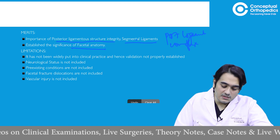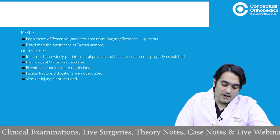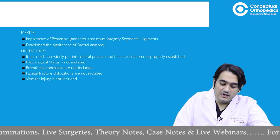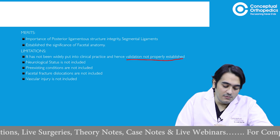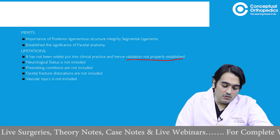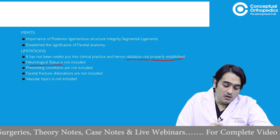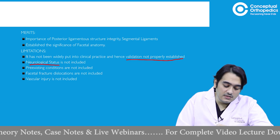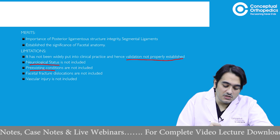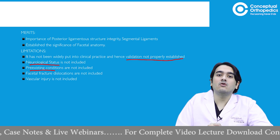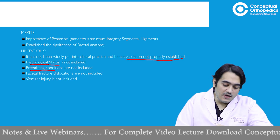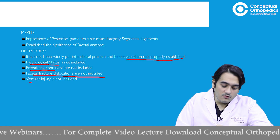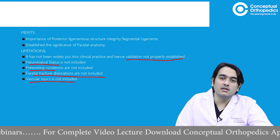The limitations of this classification system were that it was not widely put into clinical practice, so validation has not been established. They never considered the neurological status of the patient, pre-existing conditions like ankylosing spine or rheumatoid conditions. Facetal fracture-dislocations and vascular injuries are also not included in the classification.